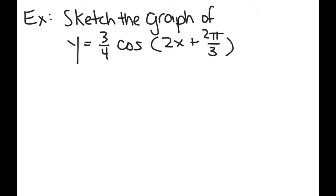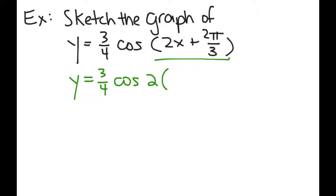Let's sketch the graph of y equals (3/4) cosine (2x plus 2π/3). The first thing to notice is that this is not exactly in the standard format, so in order to put it in the correct format I need to factor a 2 out of the parentheses — divide out a 2. When I do that, I'm left with x plus π/3 inside. Now I'm ready to find all the components. The amplitude is 3/4, so the graph goes up to 3/4 and down to negative 3/4. k is 2, which means the period is 2π over 2, or 1π.